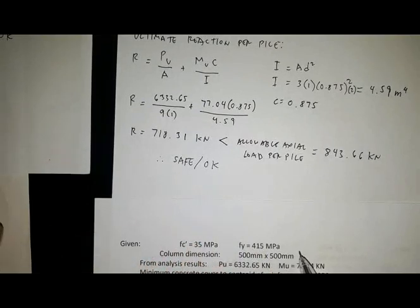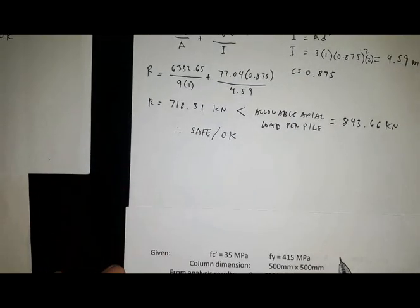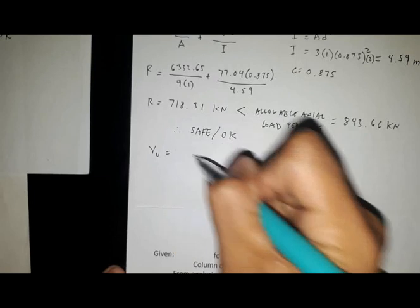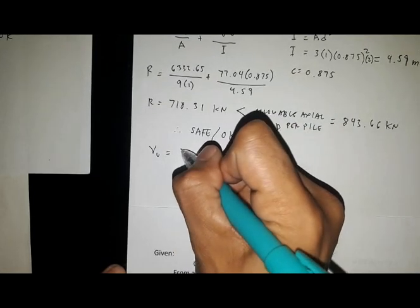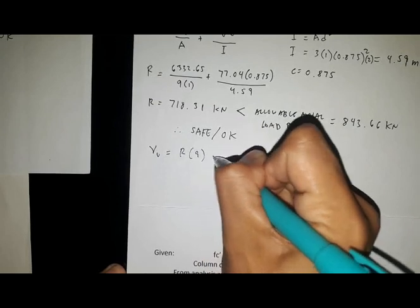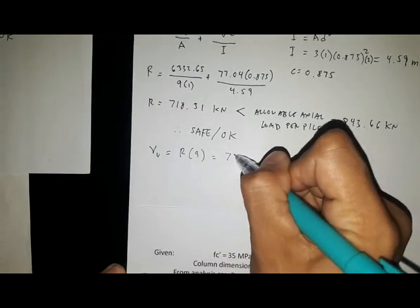Our ultimate shear Vu equals the reaction times nine, which equals 6464.79 kilonewtons.